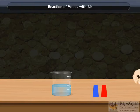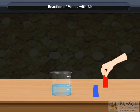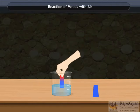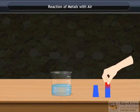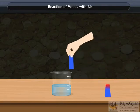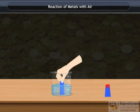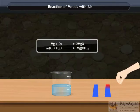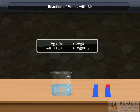Is the product formed on burning magnesium acidic or basic? We observe that red litmus turns blue but no change in the blue litmus. Thus metals react with oxygen to give metal oxide. On dissolving it produces metal hydroxides. So it is basic in nature.